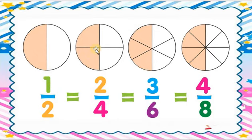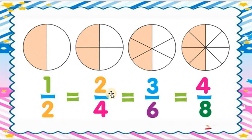In the third circle, there are six parts and three parts are shaded — so we write three upon six. In the fourth circle, there are eight parts and four parts are shaded — so we write four upon eight. Total parts go in the denominator; shaded parts go in the numerator.